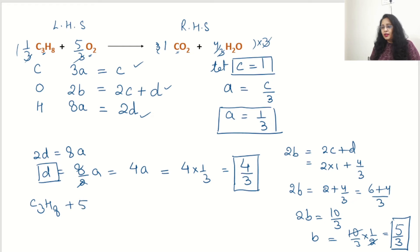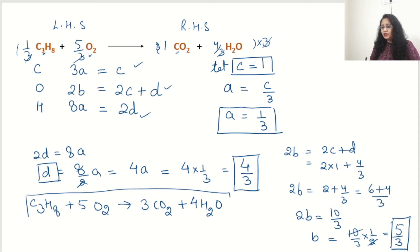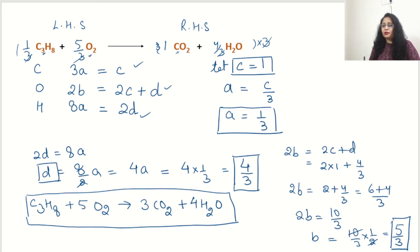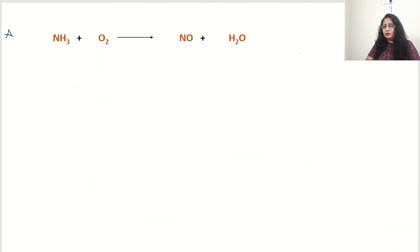After multiplying by 3, we get: 3C3H8 + 5O2 → 3CO2 + 4H2O. This reaction is fully balanced. We can verify: carbon — 3 on left, 3 on right; oxygen — 5×2=10 on left, 3×2+4=10 on right; hydrogen — 8×3=24... 3×8=24 on left, 4×2=8 on right. Balanced!